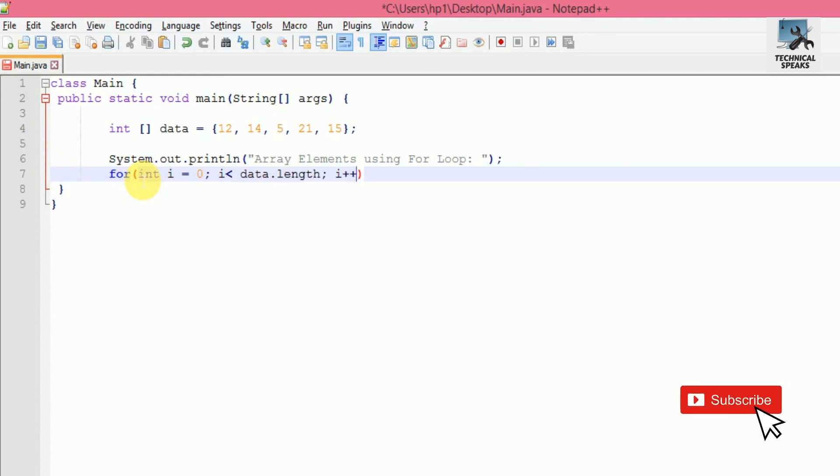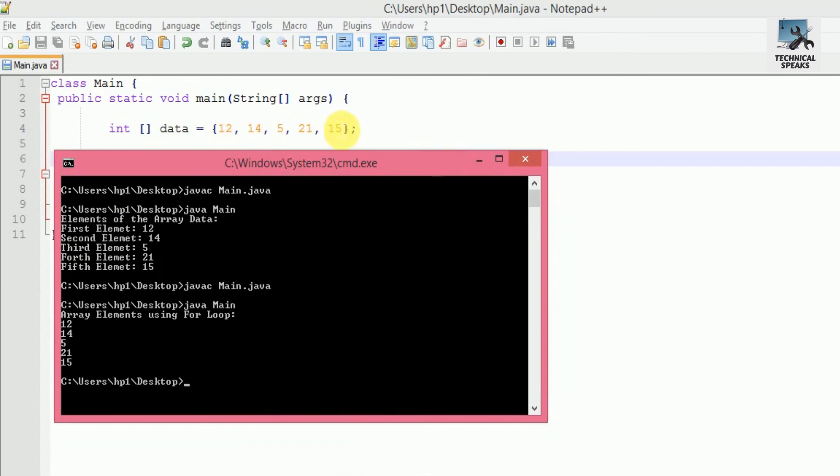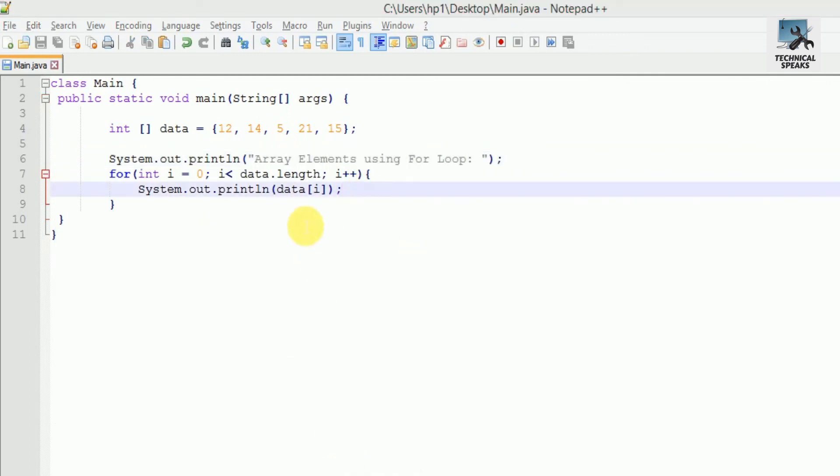data[i]. Let's save it and run the program. You can see array elements using for loop: 12, 14, 5, 21, and 15. In this example, you might think about the expression we used, that